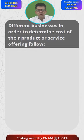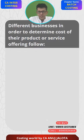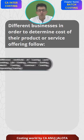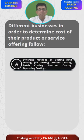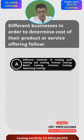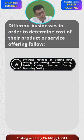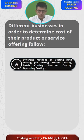The question is: different businesses, in order to determine the cost of their product or service offering, follow — and there are four options. Option A: different methods of costing like unit costing. Unit costing is whereby companies manufacture one single type of product, find out the cost of the entire company, divide by the number of units — since all units are the same, cost per unit is found. That is unit costing.